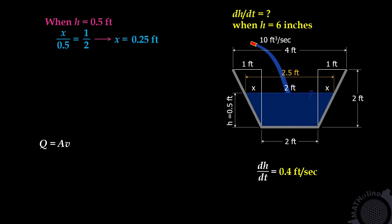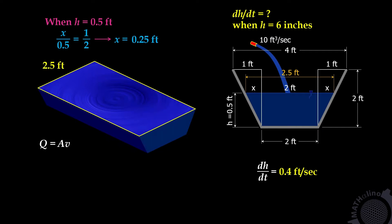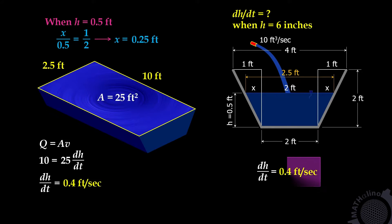From our formula discharge equals area times velocity, the area A is the area of the water surface. Area is 2.5 times 10, that is 25 square feet. Recall that Q equals 10 cubic feet per second and area is 25. What we are looking for is the velocity dh/dt. We have the answer: 0.4 feet per second, which equals the answer in our previous solution.